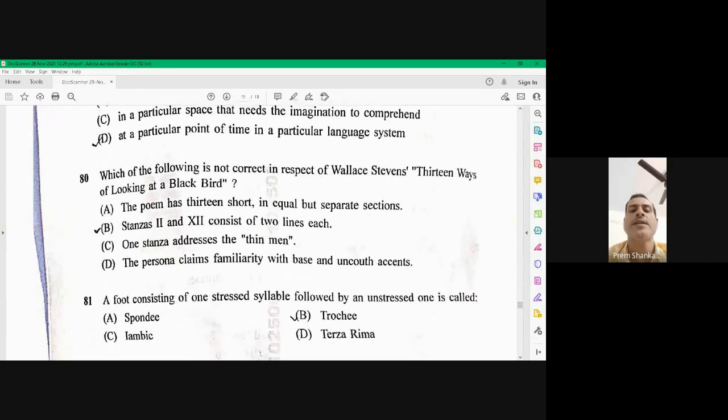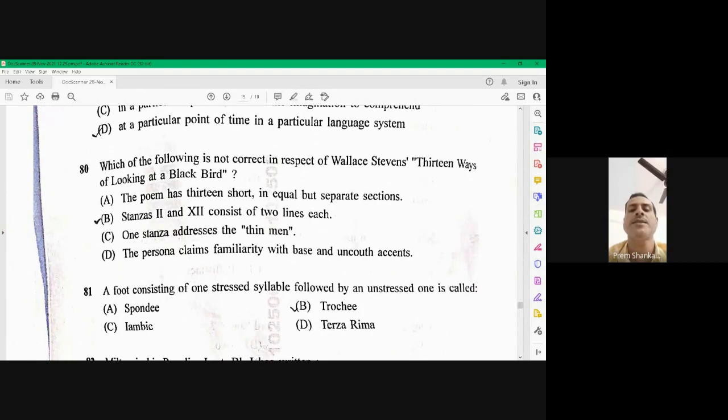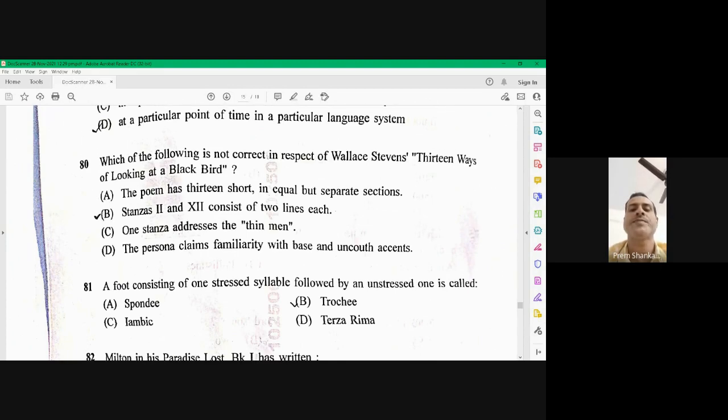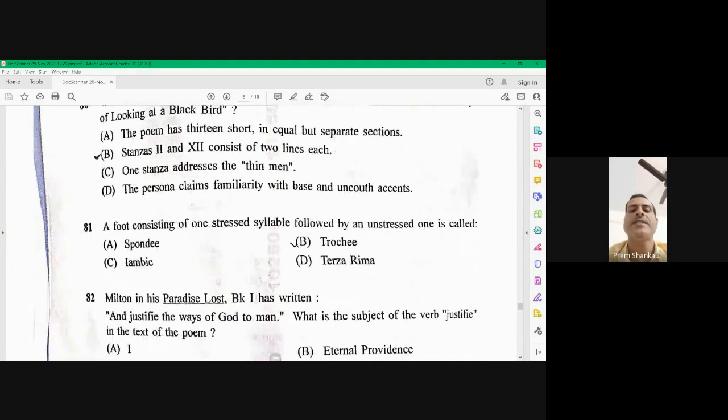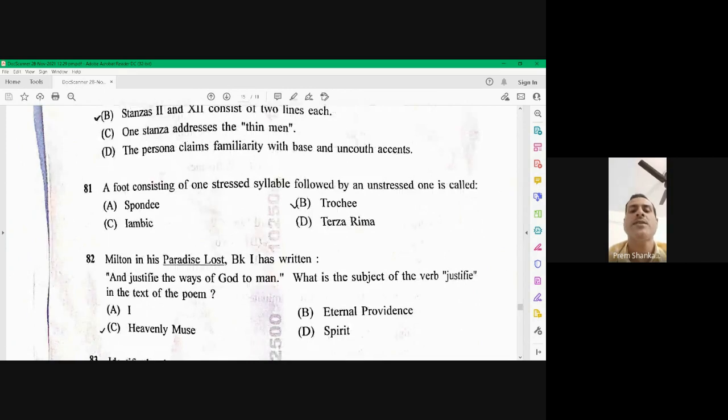Question number 81. A foot consisting of one stressed followed by an unstressed syllabus is known as Traki. Traki is the right option here. Question number 82. Milton in his Paradise Lost book one has written and justifies the ways of God to man. What is the subject of the word justify in the next text of the poem? So here John Milton calls the writing news as a spirit and he said that the spirit should help him so that he can justify the ways of God to man. So I is the right option here. A is the right option here.